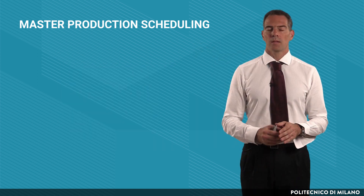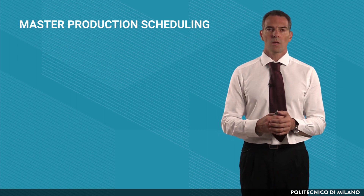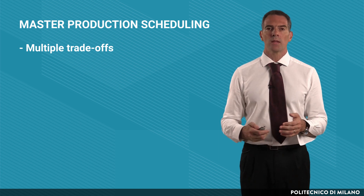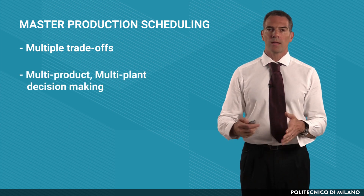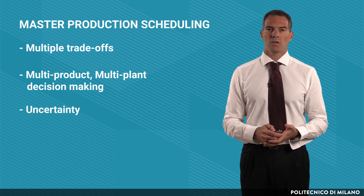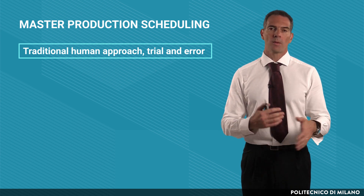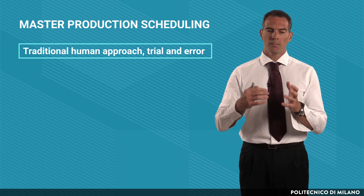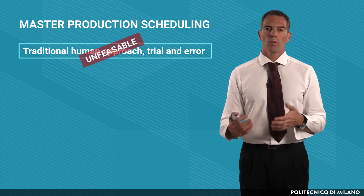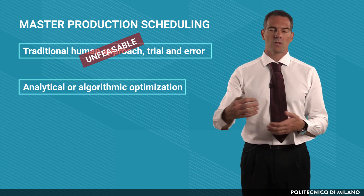So, the Master Production Schedule is a very complex task with multiple trade-offs to be considered within the same objective function. It has to deal with multi-product, multi-plant decision making in an environment strongly affected by uncertainty. A traditional approach in which a human planner performs trial and errors to produce this plan is, in today's scenario, totally unfeasible, while analytical or algorithmic optimization, which will be discussed in the following modules, is usually very useful to support the production planner.